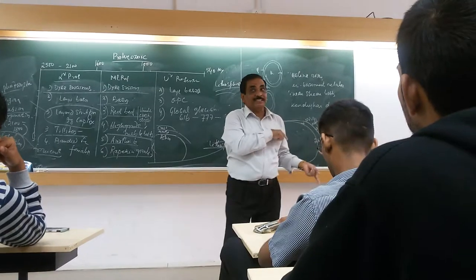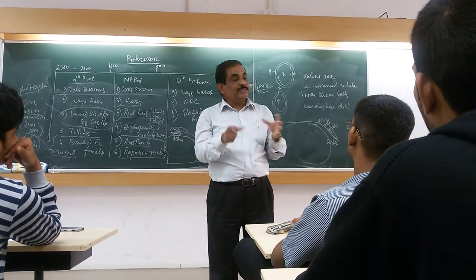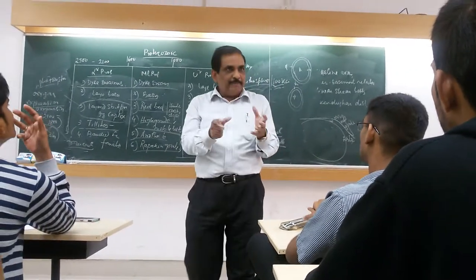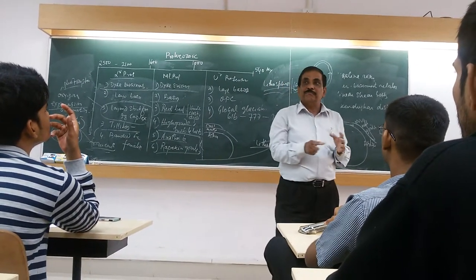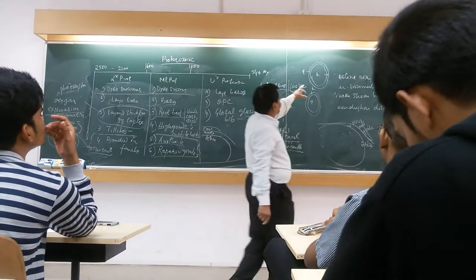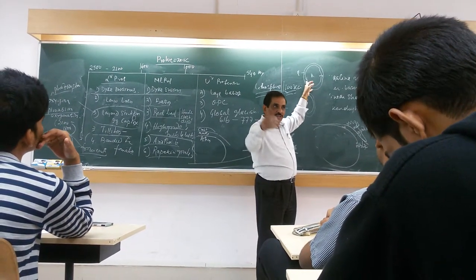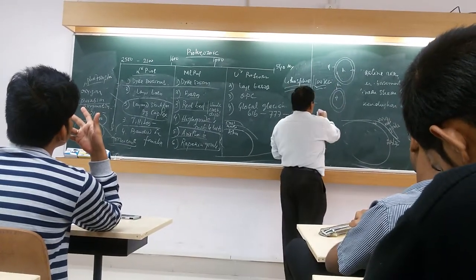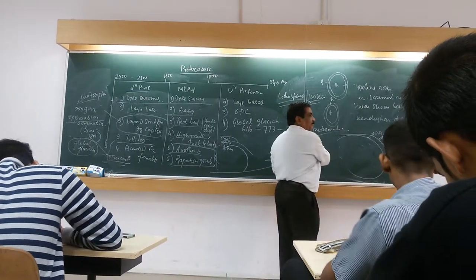So what processes are there? How are rapakivi granites and anti-rapakivi granites different in granite? How does it happen? What processes are there? It is a metasomatic process — the outside things, you know, come from the surrounding: the water, the hydrothermals. So this is a metasomatic process.